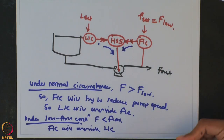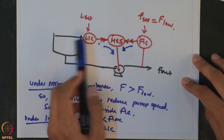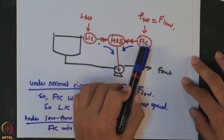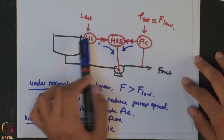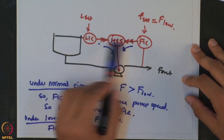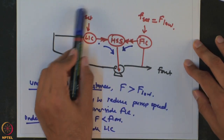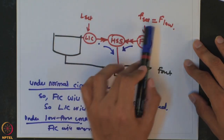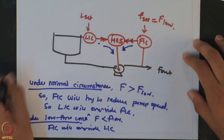By using the high selector switch, you can control both level and flow at or above their respective values. Level is the primary control variable and flow has a set point driven by safety conditions.